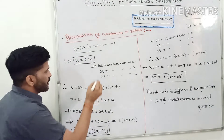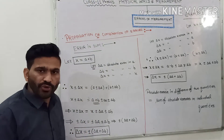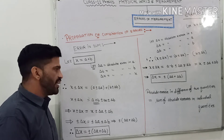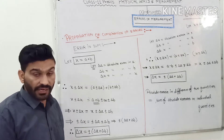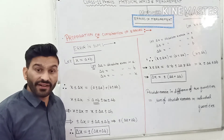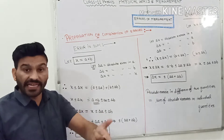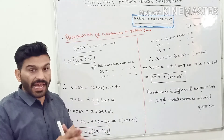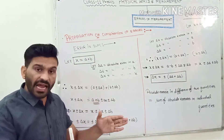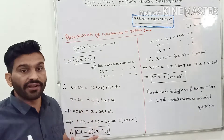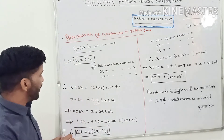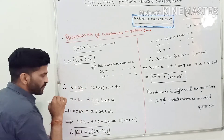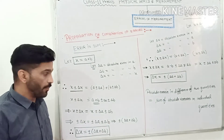Let delta a be the absolute error in a, delta b be the absolute error in b, and delta x be the absolute error in x. Students, the error can be added or subtracted — यानि कि error can be added or subtracted. So the error in x, delta x, can be added or subtracted, so I use plus minus.